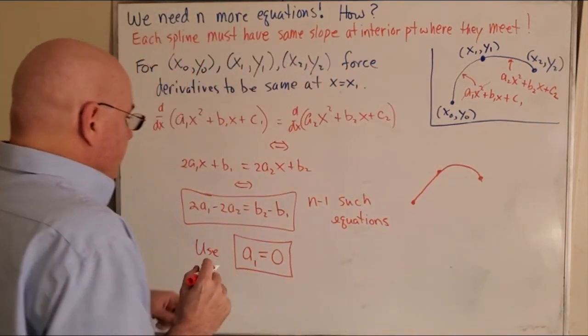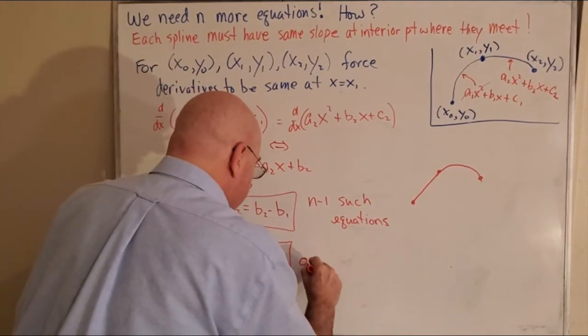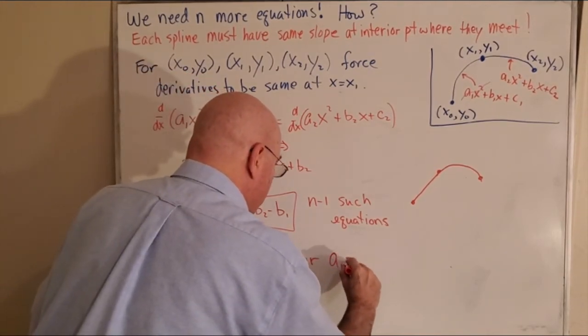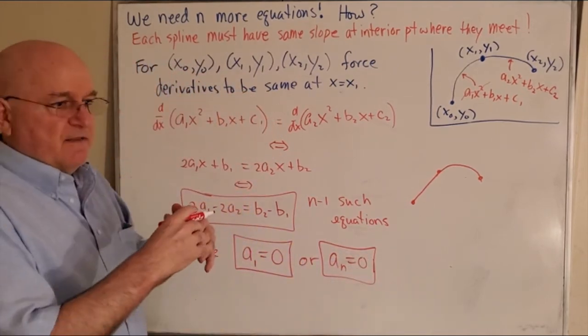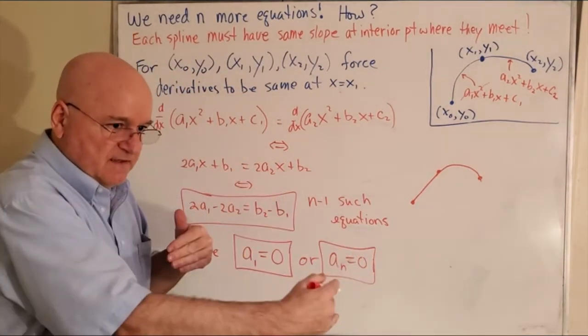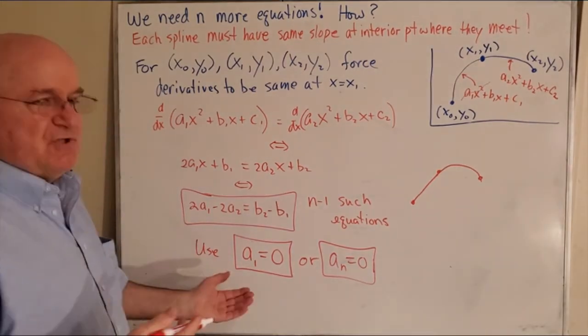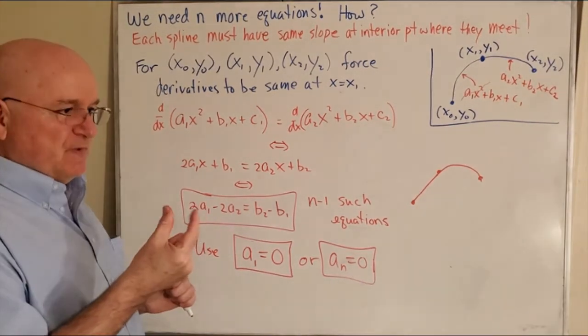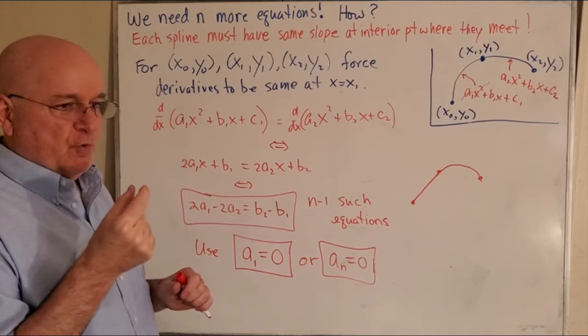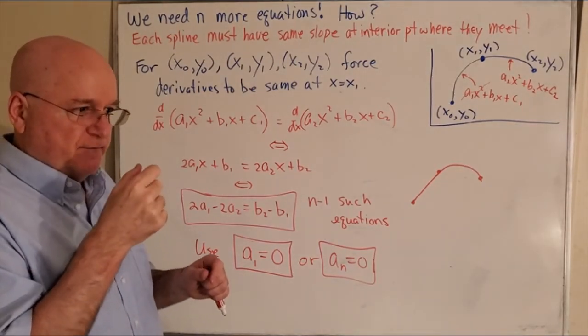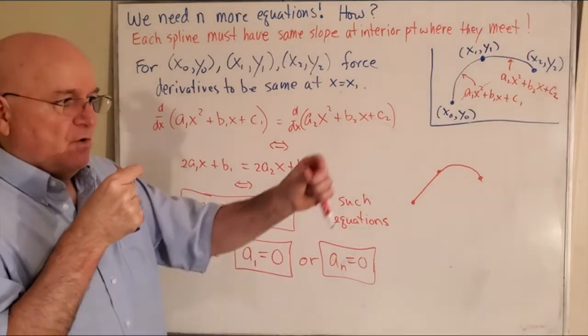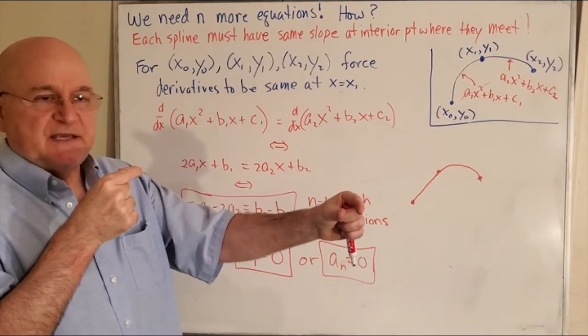Now there is one other option I'm going to go ahead and say: or an = 0, which would make the very last segment a line segment. How would you determine which one? Well, usually whichever two points' distances are smaller between x0 and x1, or x(n-1) and xn.